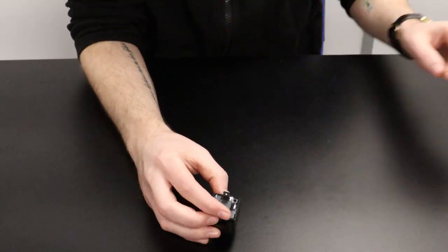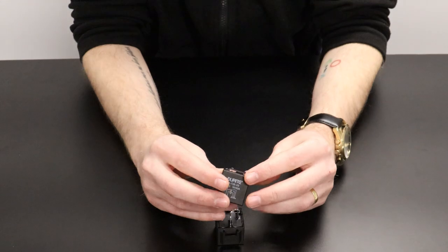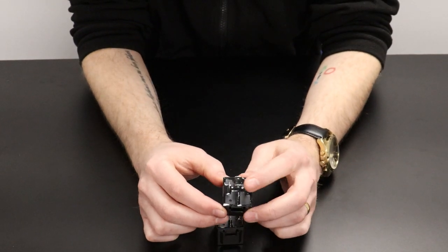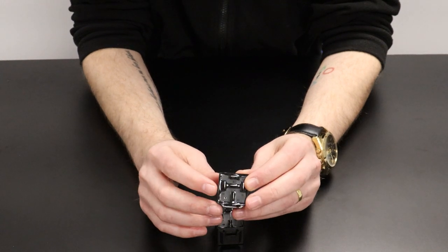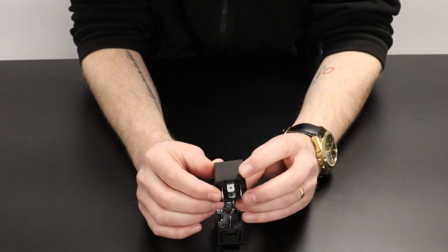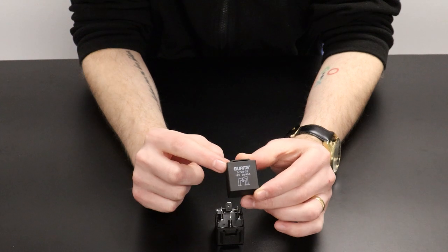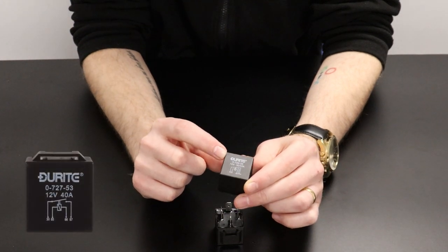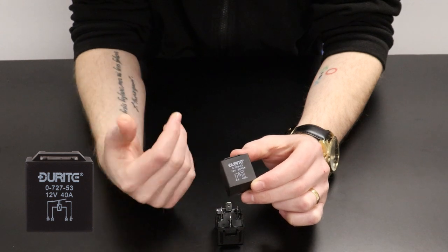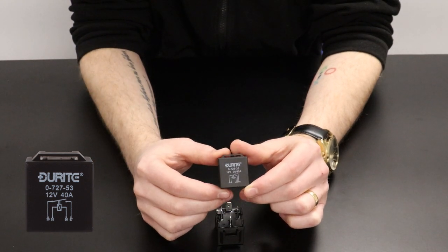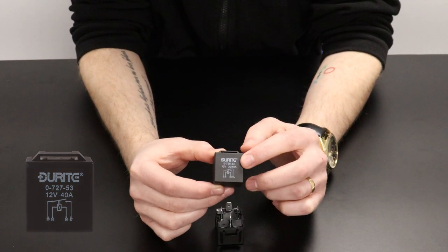On changeover relays like our relay here you'll see we've got a fifth terminal which will be marked as 87A, which is the normally closed switch terminal. Relays will normally have a schematic printed on them to show you the basic inner workings of the relay. This can also help you identify which pins need to be wired in what configuration.